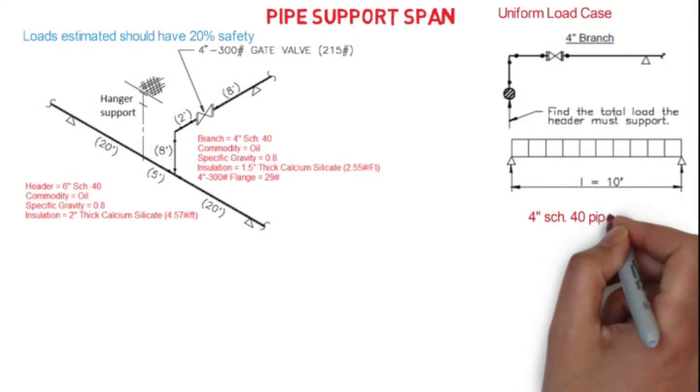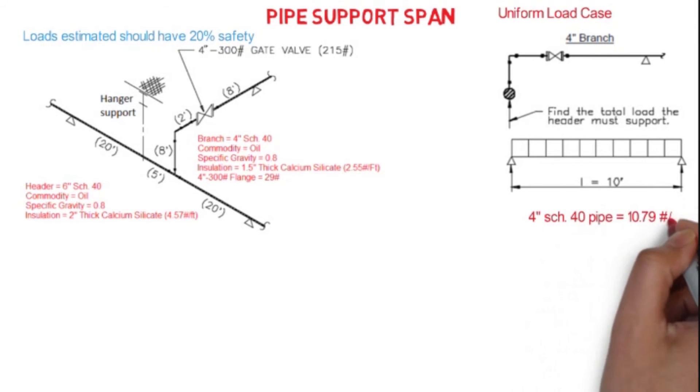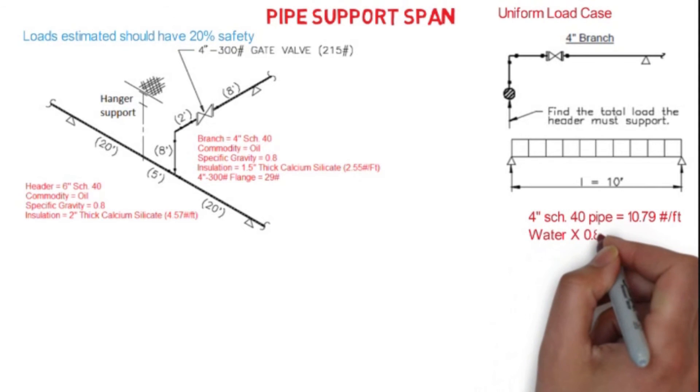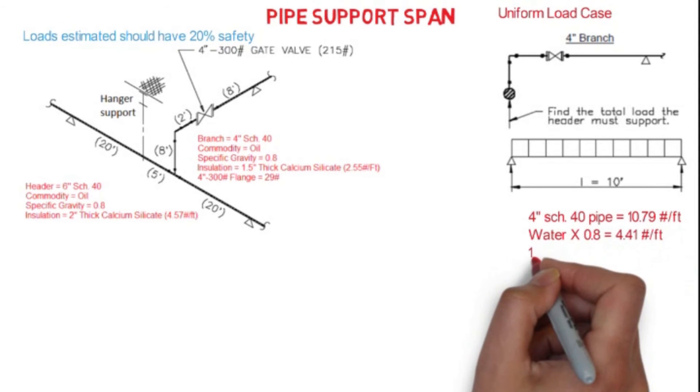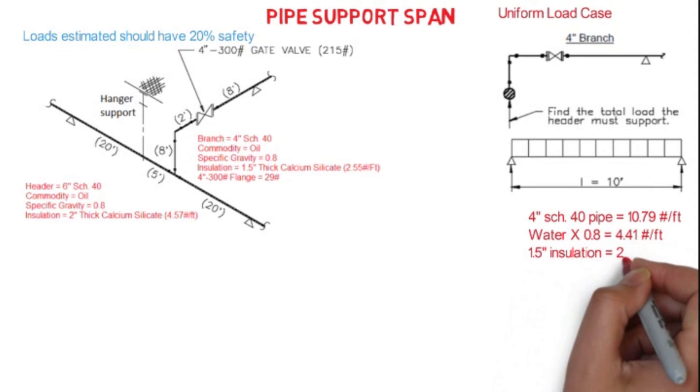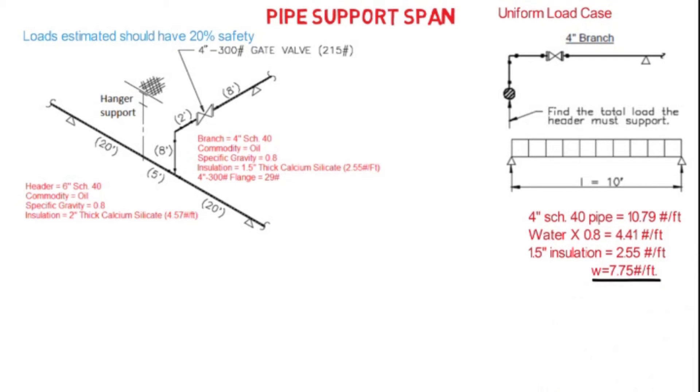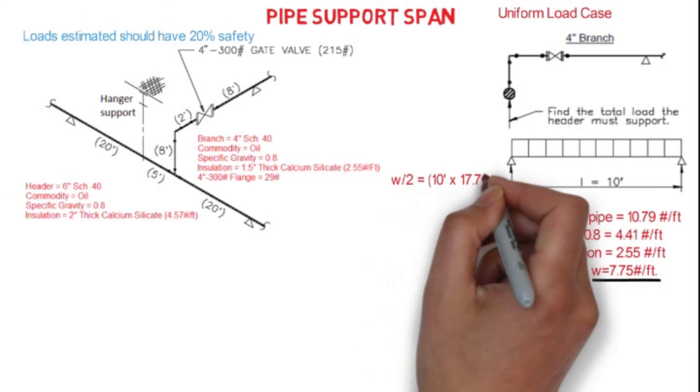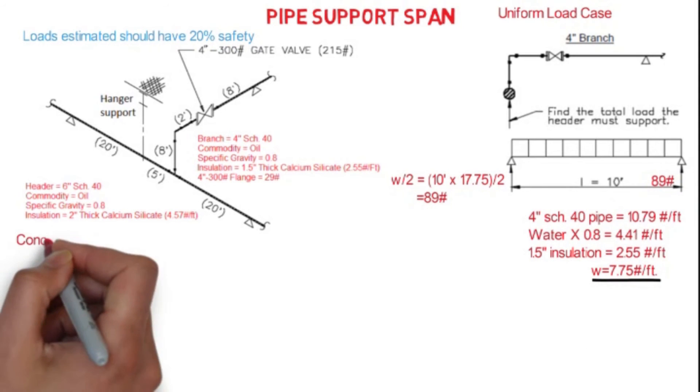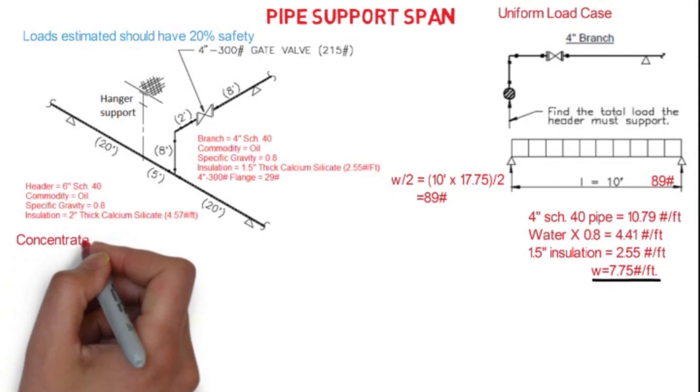Weight per foot for the fluid, which is oil, so we have to multiply the specific gravity of the oil to weight of the pipe with water to get the weight of the pipe with oil, that is 4.41 pounds per foot. Similarly, for insulation, we have 2.55 pounds per foot. Now we have to add these three values to get the total weight per foot on this particular section. We have 10 feet span, so each end of the support has 89 pound weight.